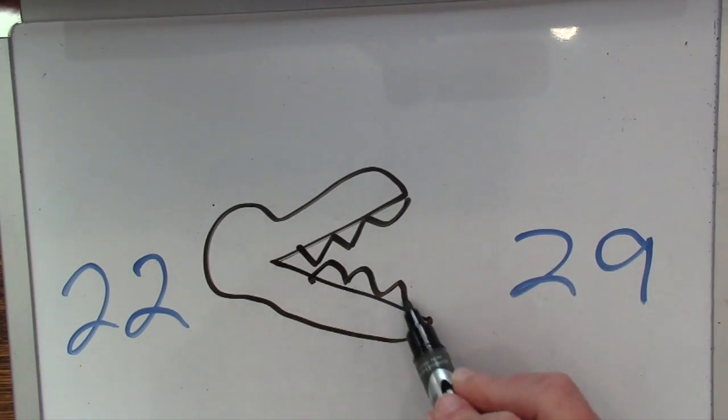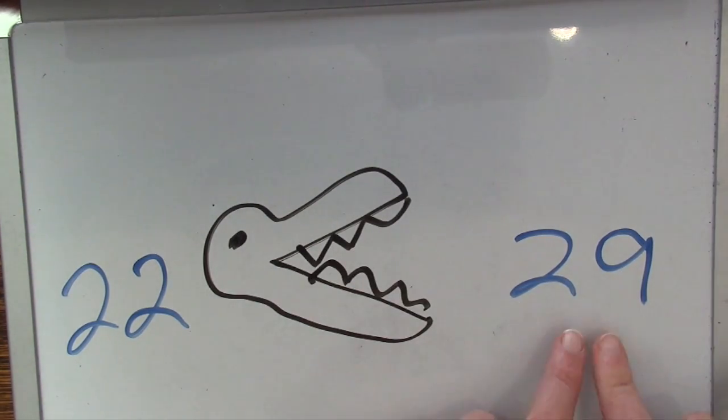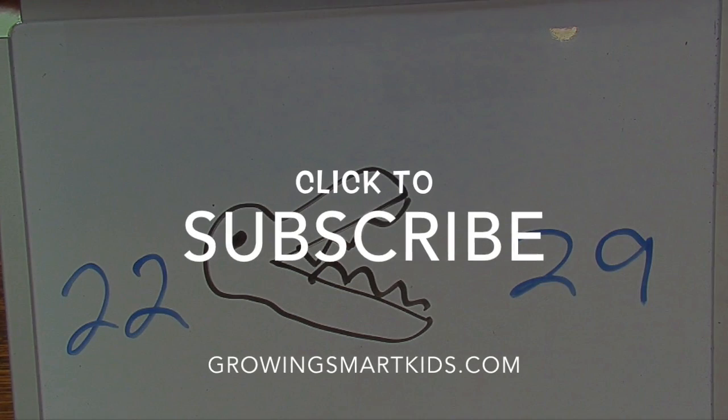There's all his big old teeth. He's very happy right now. 29 is greater than 22 and 22 is less than 29. And that's how you tell the difference between the greater than and less than symbols.